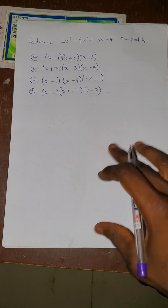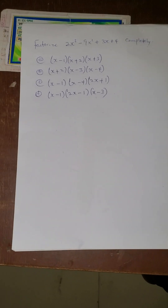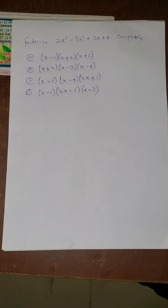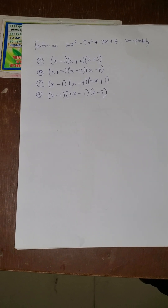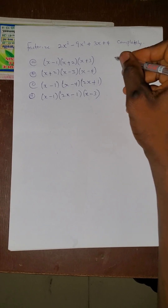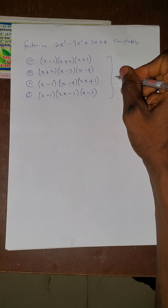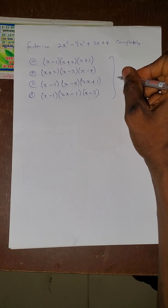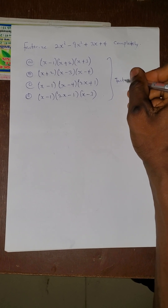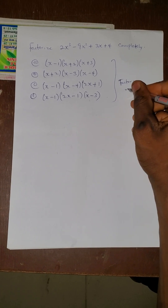Let's say it's factorized: 2x cubed minus 9x squared plus 3x plus 4. We need to factorize it completely. But we are given the options in factor form, not in root form.